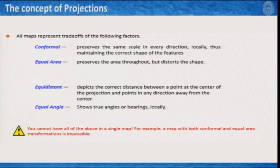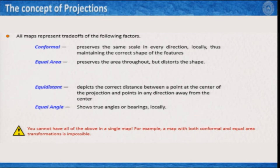The equidistant projection depicts the correct distance between a point at the center of the projection and points in any direction away from the center. So conformal mapping keeps the shape and equidistant projection keeps the distance between two objects. Equal area mapping preserves the area but distorts the shape. In equal angle, you keep all the angular relationships equal to the projected map.